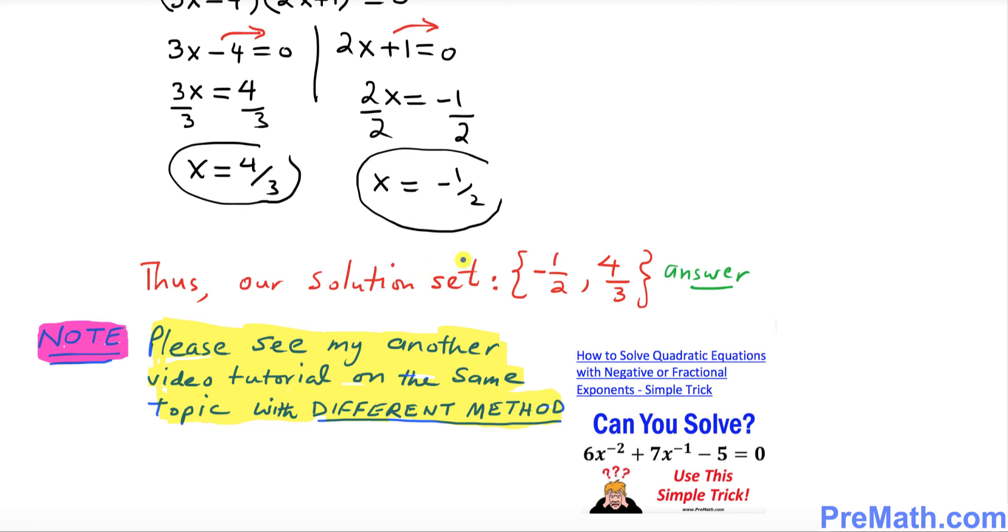And thus our solution set turns out to be negative 1 over 2 and 4 thirds. That's our answer.